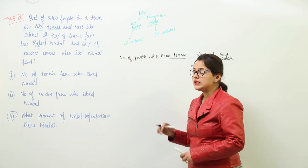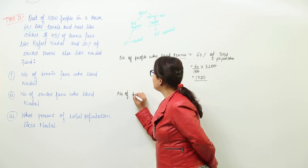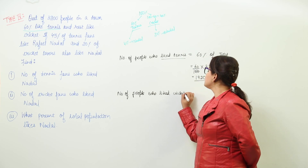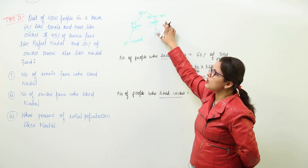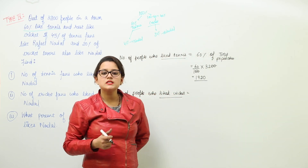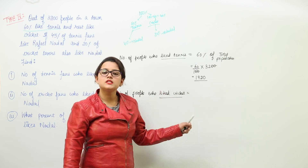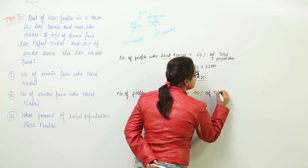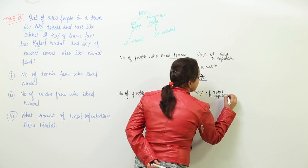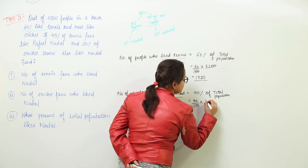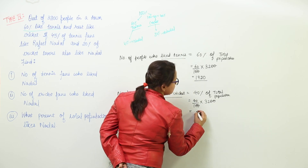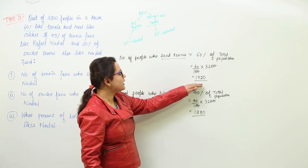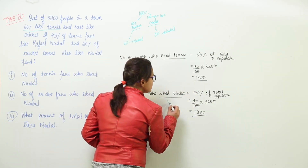So 1920 people are liking to play tennis. Similarly, let us find out the number of people who liked cricket. If 60% like tennis, then the remaining 40% are going to like cricket. So we do 40 upon 100 into 3200, and cancelling out the zeros we get 1280. Out of 3200 people, 1920 like tennis and 1280 like cricket.